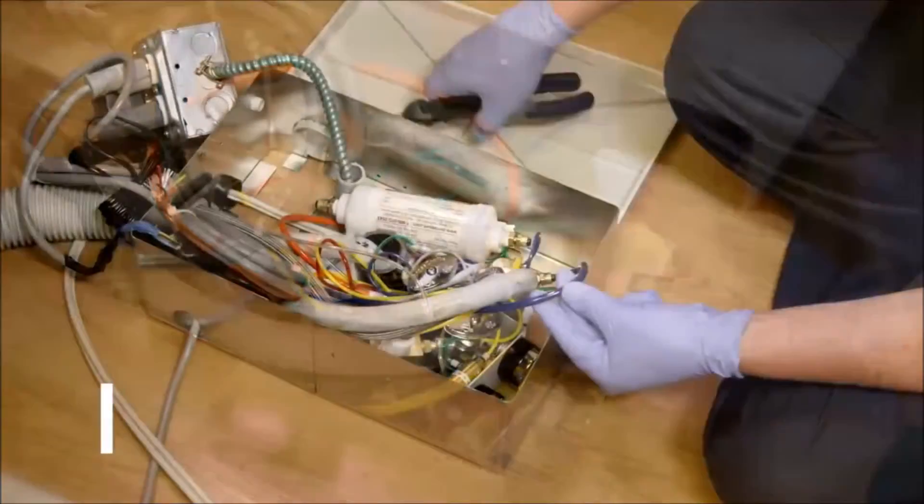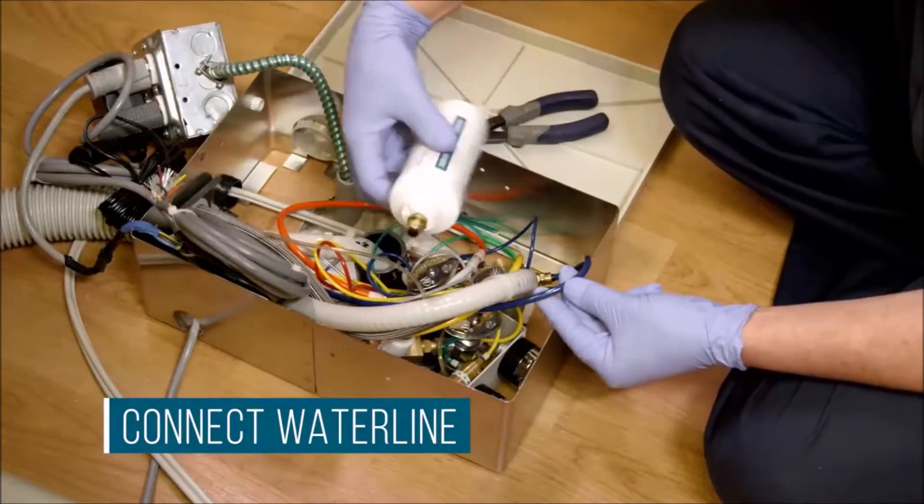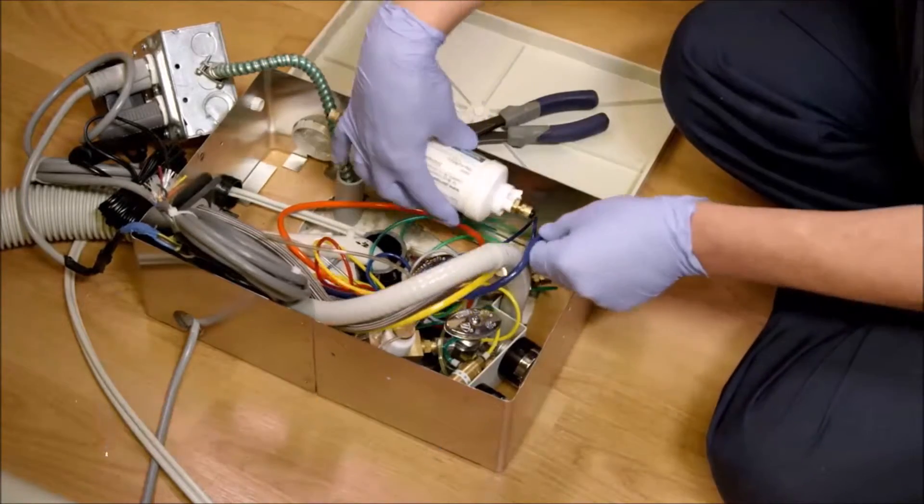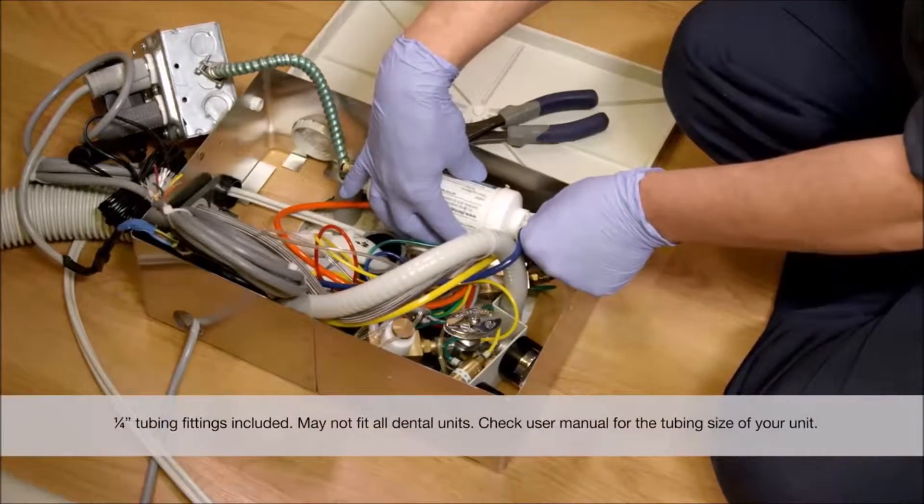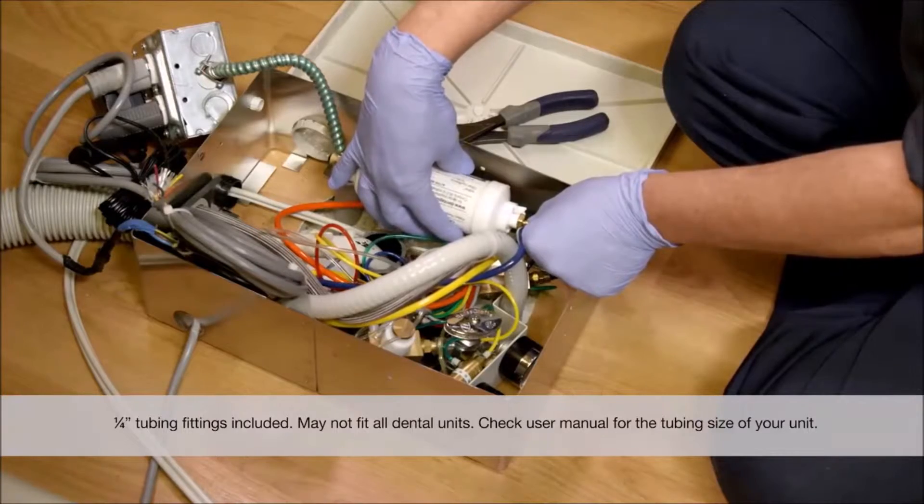Next, you'll connect the water line to the Dentipure cartridge. Measure your water line from the regulator to ensure you will have enough tubing to reach both the inflow and outflow sides of the cartridge.